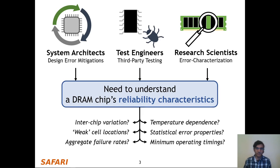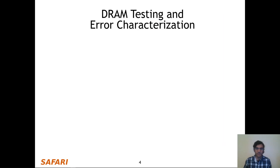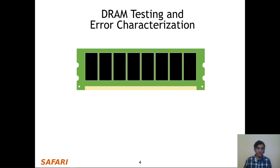These characteristics include things like manufacturing variation between different DRAM chips, the location of weak cells within DRAM chip, and so forth, as shown on this slide. The way they determine these properties is by using extensive DRAM testing and error characterization. Given a DRAM chip, they study the observed bit flips when errors occur.